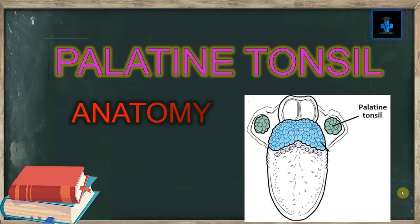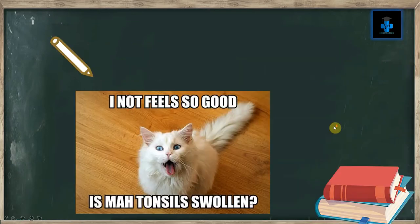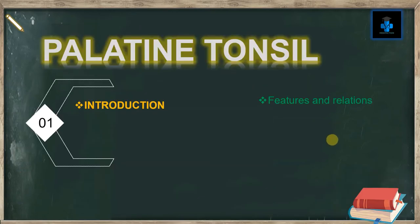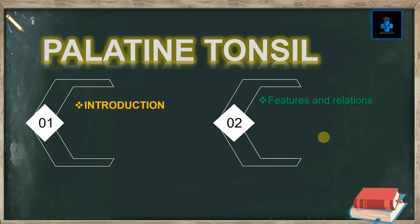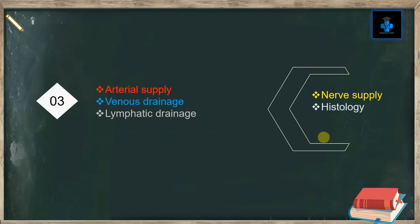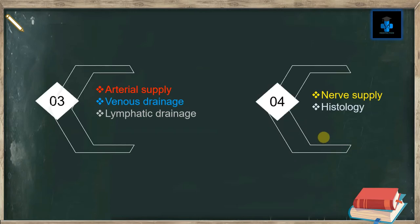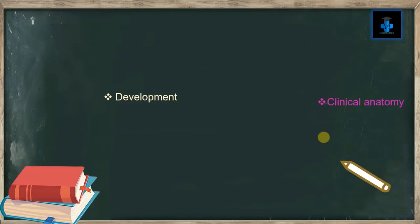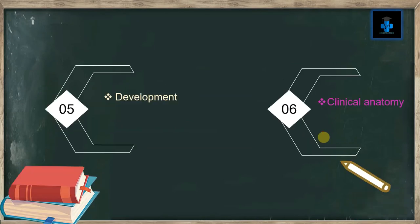This is how a palatine tonsil looks like. In this video, I will be enumerating an introduction, features and relations of the palatine tonsil, arterial supply, venous drainage, lymphatic drainage, nerve supply, histology, development, and also some important clinical anatomy.